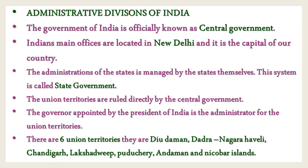Children, the Government of India is officially known as the Central Government. Its main offices are located in New Delhi, which is the capital of our country. The administration of the states is managed by the states themselves - this system is called the State Government. The Union Territories are ruled directly by the Central Government. The Governor appointed by the President of India is the administrator for the Union Territories. There are six Union Territories.